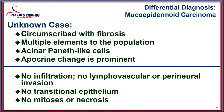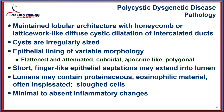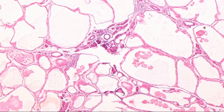Polycystic dysgenetic disease is marked dilatation and cystic change of the intercalated ducts. It is an inherited familial disease with females affected much more frequently, usually presenting in childhood with bilateral swelling. There is maintained lobular architecture with a honeycomb lattice-like appearance, variably lined cystic spaces with flattened cuboidal or apocrine-like epithelium, very limited inflammation, and sometimes proteinaceous material within the cysts.